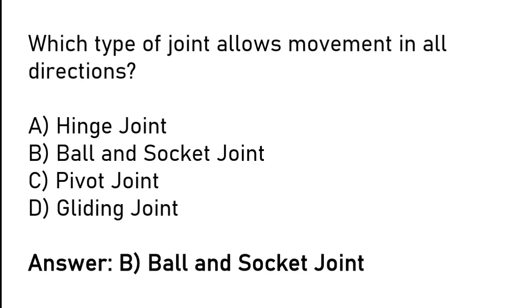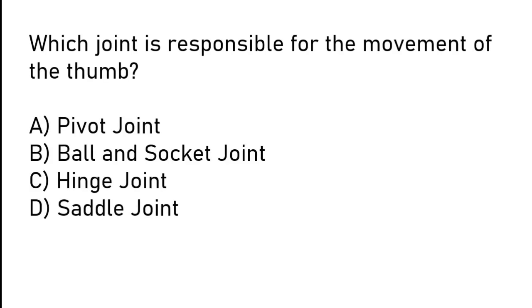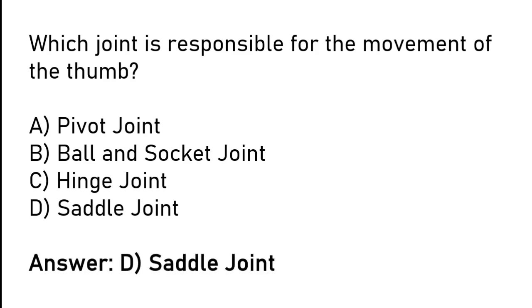Which joint is responsible for the movement of the thumb? Pivot joint, ball and socket joint, hinge joint, or saddle joint. The correct answer is option D: saddle joint is responsible for the movement of the thumb.